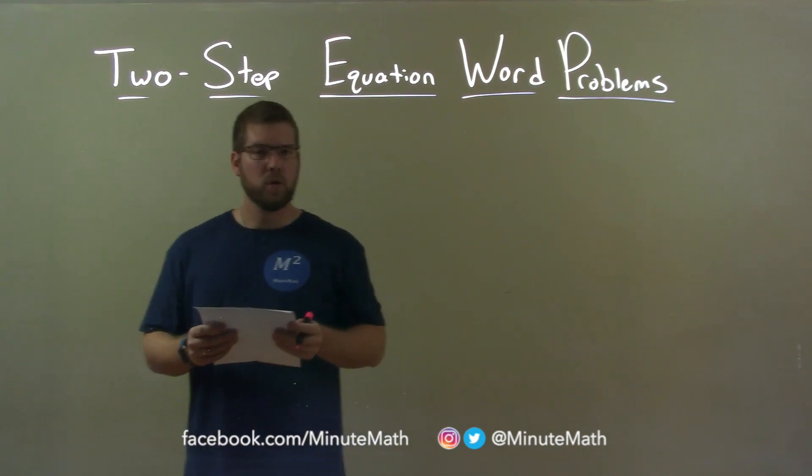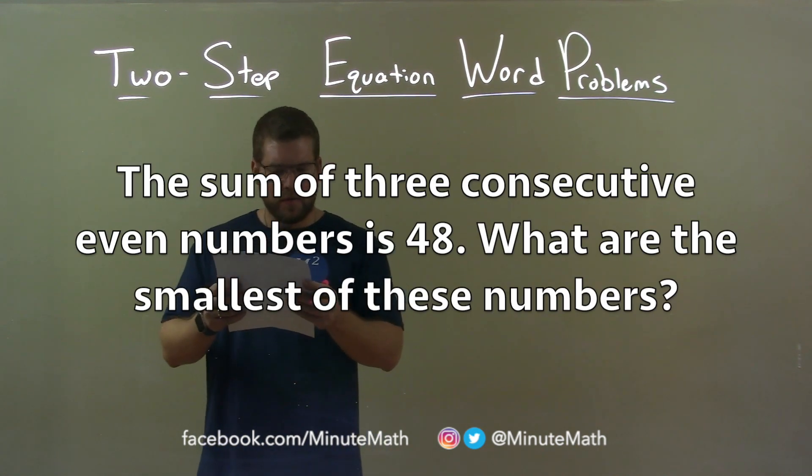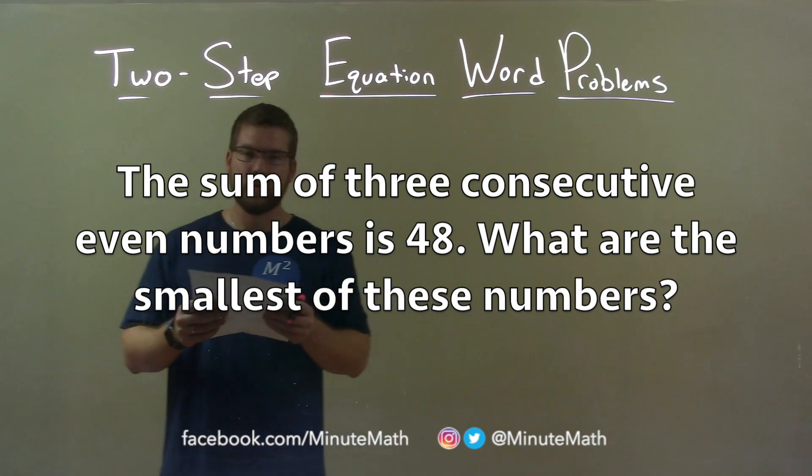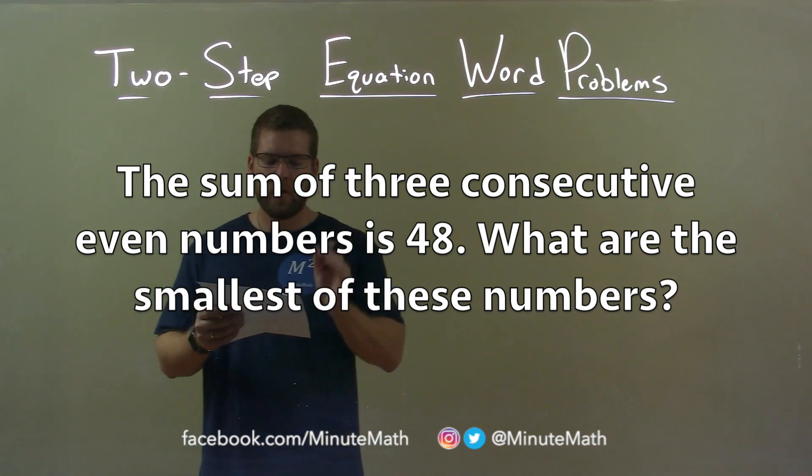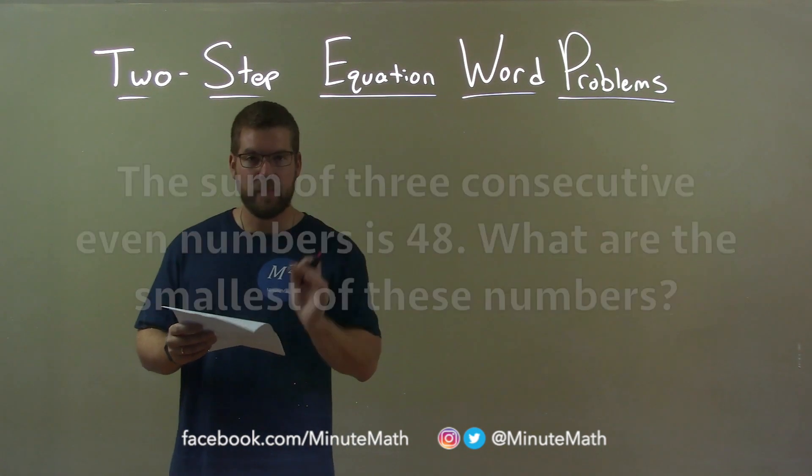If I was given this word problem, the sum of three consecutive even numbers is 48. What are the smallest of these numbers?